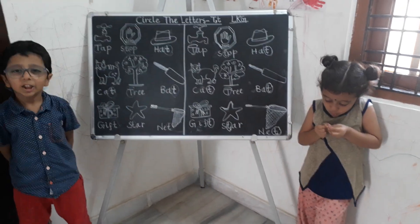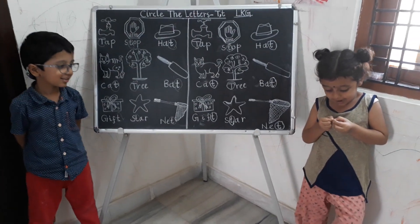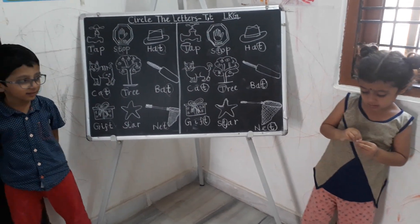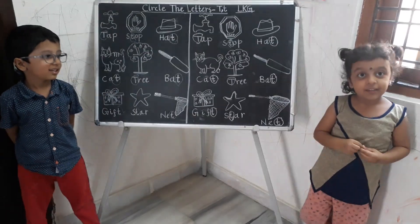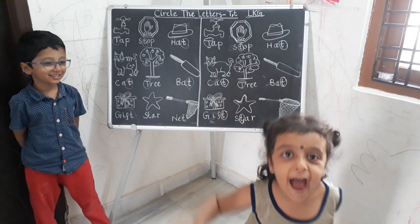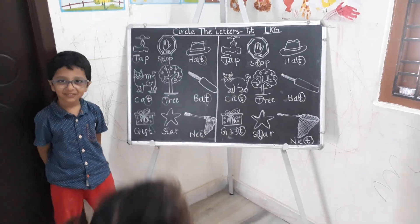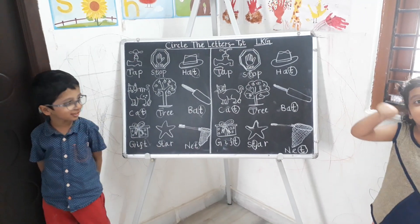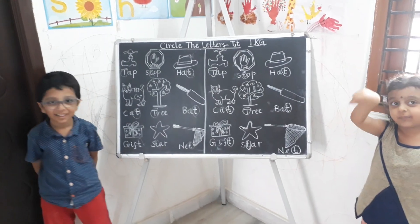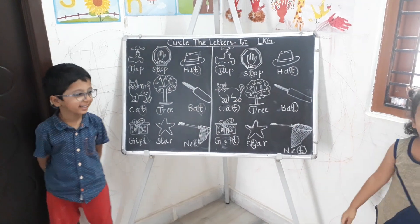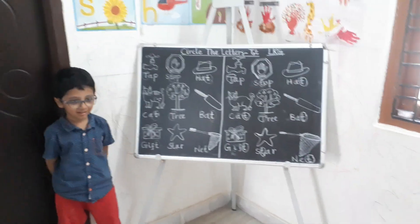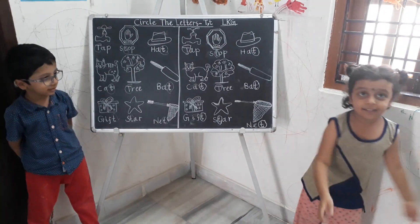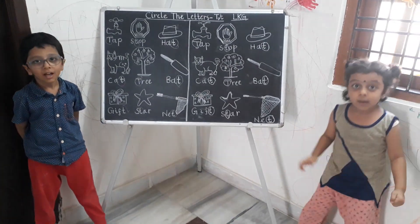Awesome! How was the activity? Super! Did you enjoy doing this activity, Shreya and Adarsh? Yes. Do you like to do more activities like this? Yes. So in this activity, what did we do? We circle capital T and small t. Do you like to do more activities like this? Yes. Shreya and Adarsh? Yes. Come on, say bye-bye. Bye-bye.